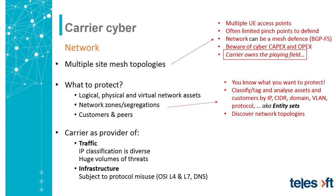You already know what you want to protect. You can classify and tag assets by IP address ranges, domains, VLANs, and protocols — or any combination. We call these entity sets. They don't have to be provisioned; they can be discovered as well. For instance, by tapping IP fix you can discover the topology of the routing infrastructure, but you can also discover the attacking network topology if it's a botnet.